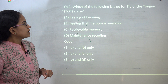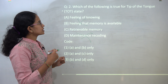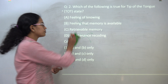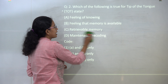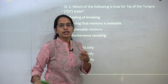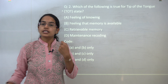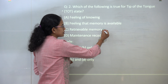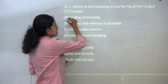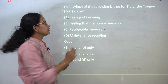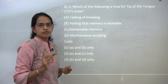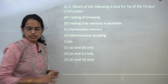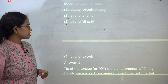The next question asks which of the following is true for the tip-of-the-tongue state. Tip-of-the-tongue state means you feel that you know something but it's not exactly coming to your mouth — you are not able to retrieve it. So it is not a retrievable memory, making that option incorrect. There is a feeling that you know, and a feeling that the memory is available. So options A and B would be the correct choice.